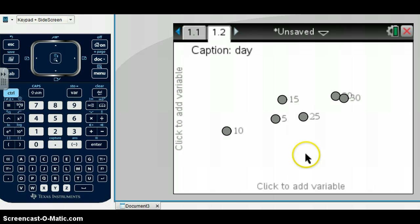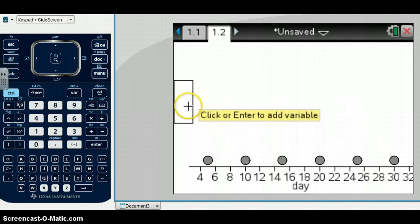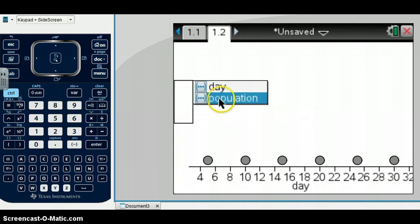And on the bottom here, where it says click to add a variable, we're going to click and add a variable, and we're going to put our days down on the x-axis. And then I'm going to come over here to the y-axis, and you see that box pop up. We're going to click in there, and we're going to add our next variable, which is population.